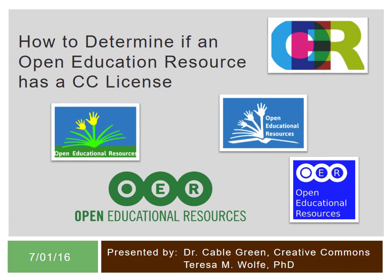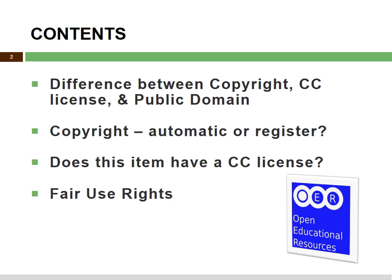Hello and welcome. This is a short video on how to determine if an open education resource has a CC license. In this short video, we will discuss the differences between a copyright, a CC license, and a public domain. We'll discuss whether a copyright is automatic or if you have to register for it, how to identify if a particular item — in this case an open education resource — has a CC license, and a description of what fair use rights are. So let's begin.